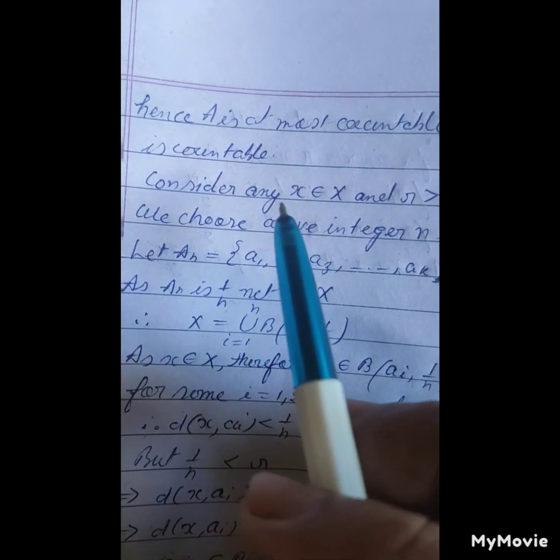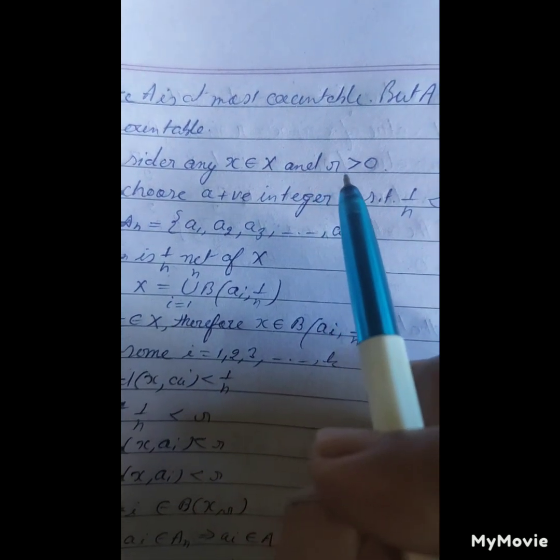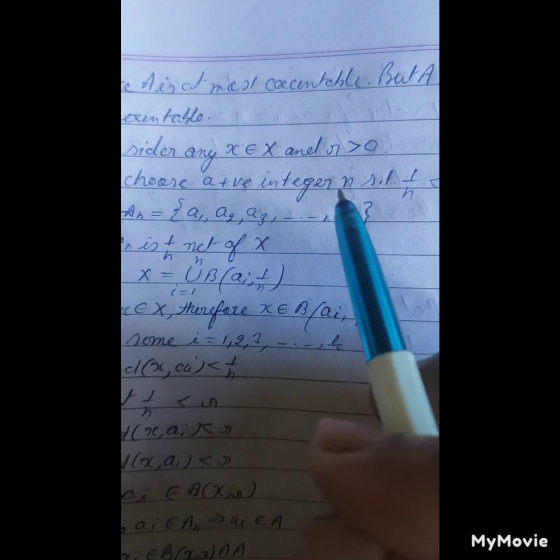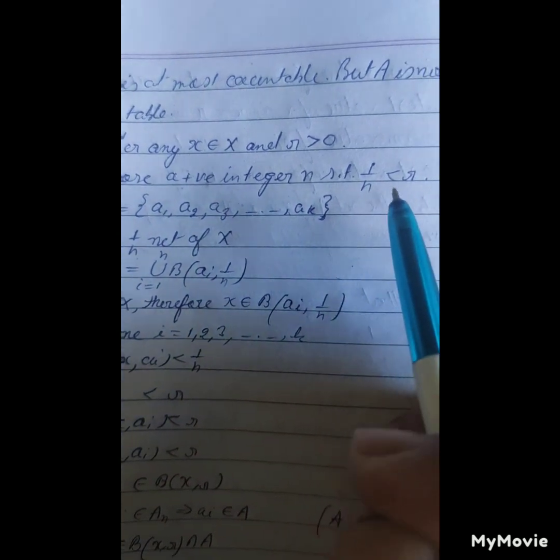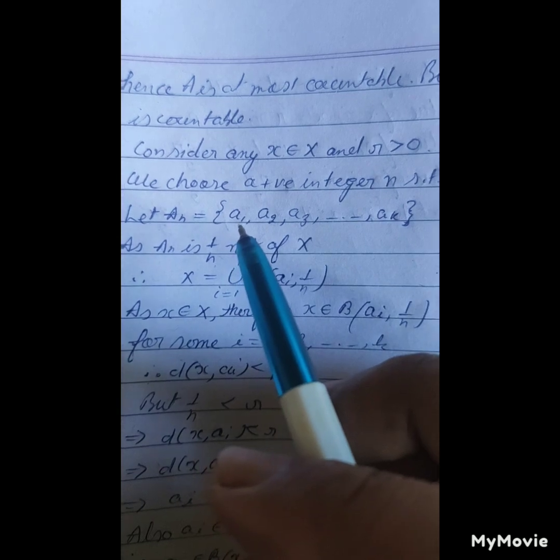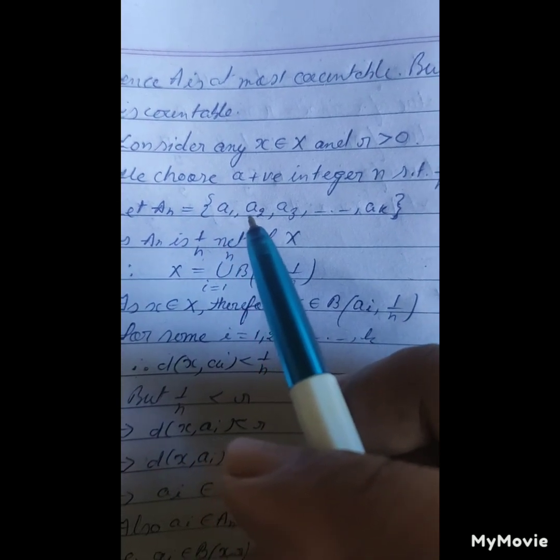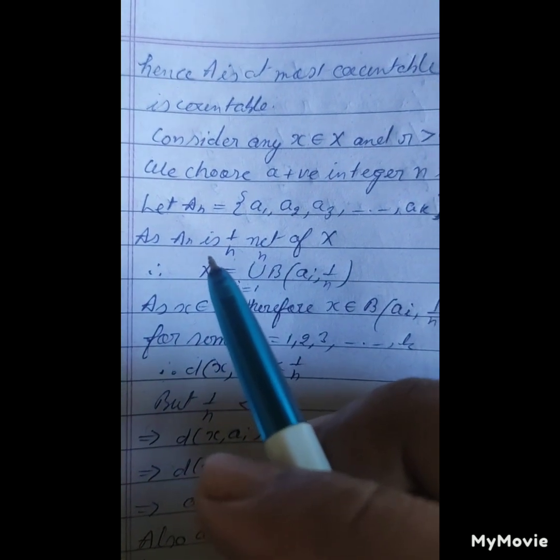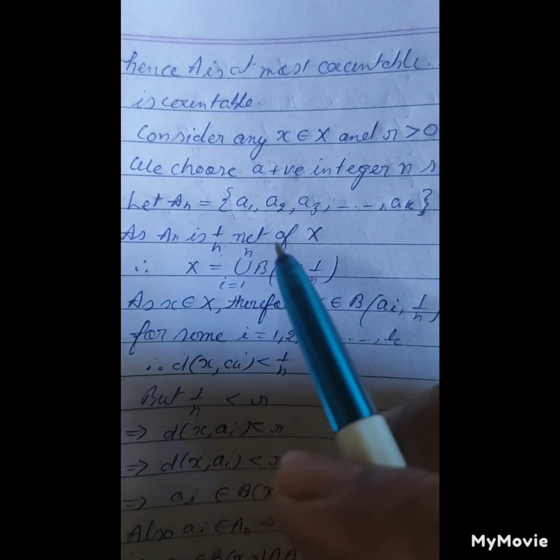Consider any x belonging to capital X and r is greater than 0. We choose a positive integer n such that 1 upon n is less than r. Let A_n equal curly bracket a_1, a_2, a_3, and so on, a_k curly bracket close.